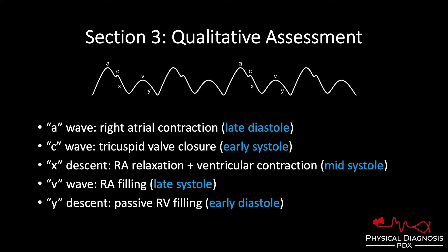What happens in early systole? We have isovolumetric contraction, where the ventricle doesn't quite mechanically contract yet, but the pressure builds up, and that's going to slam the tricuspid valve shut. When the tricuspid valve slams shut, it bulges into the right atrium, and that causes a little pressure blip known as a C-wave. The C-wave is not visible at the bedside.